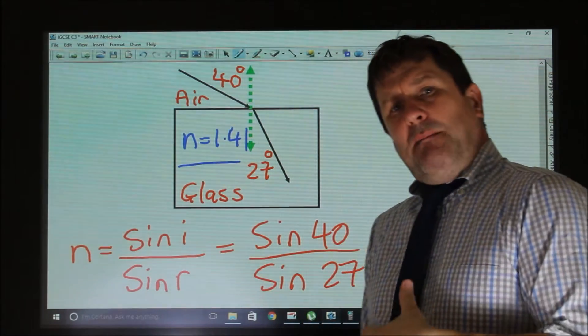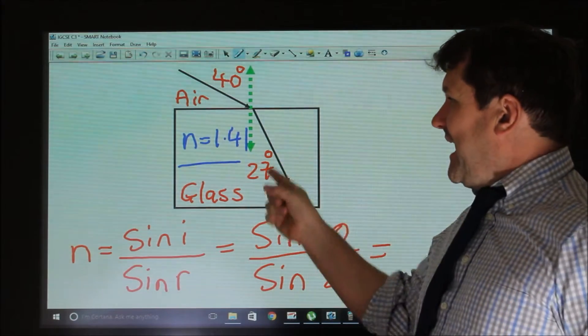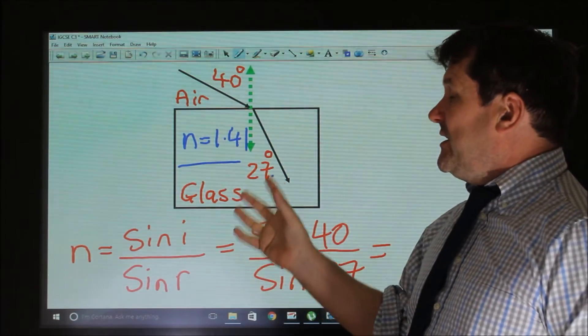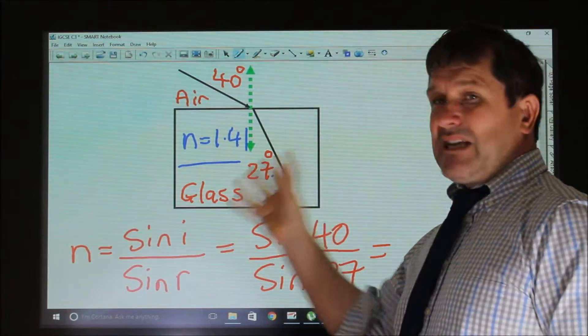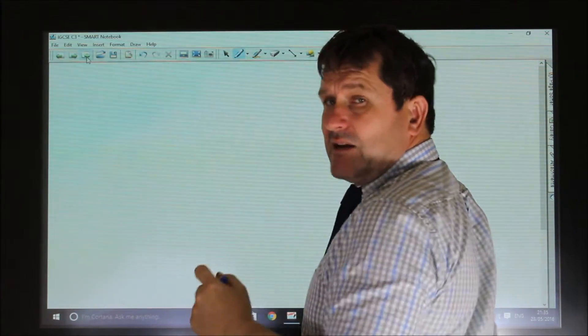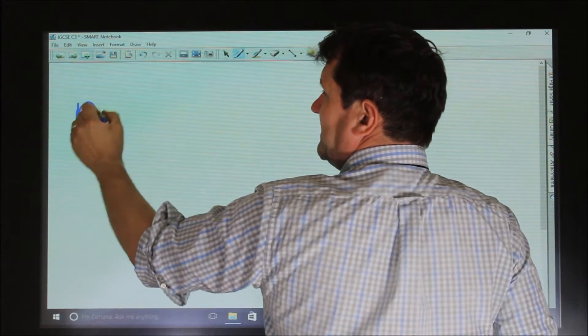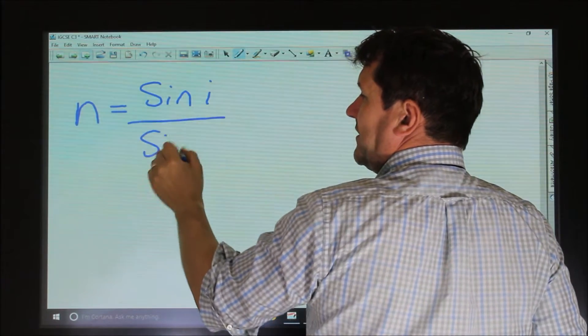Now it could be more difficult than that. We could be asked to calculate the angles instead of the refractive index. So when we're given the refractive index, you might be asked to calculate the angles. So if you're asked to calculate the angle, we've got to remember refractive index equals sine I over sine R.